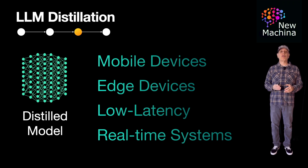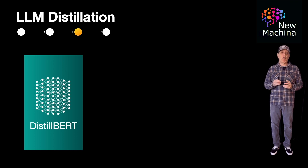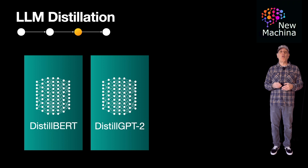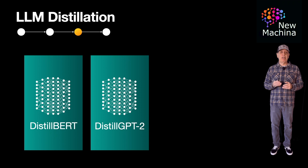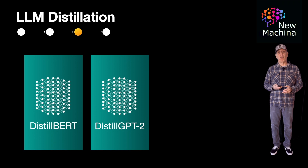So what are some examples of distilled models out in the real world? The first is DistilBERT, which was distilled from BERT developed by Google. DistilBERT boasts being 40% smaller, 60% faster, and still retains 97% of BERT's performance. Another distilled model is DistilGPT-2, which was distilled from GPT-2 developed by OpenAI. DistilGPT-2 is between 35% and 40% smaller, 1.5x faster, and still retains between 95% to 97% of GPT-2's performance.